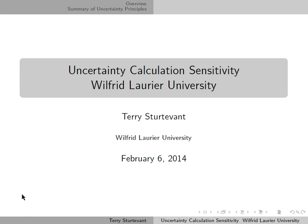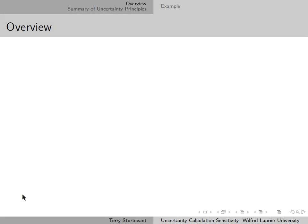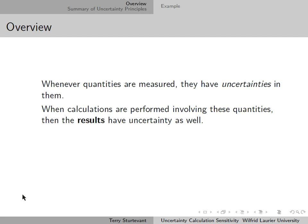This document is about calculating the sensitivity of uncertainties in final results to the uncertainties in individual quantities. Whenever quantities are measured, they have uncertainties with them. When calculations are performed involving these quantities, then the results have uncertainty as well.